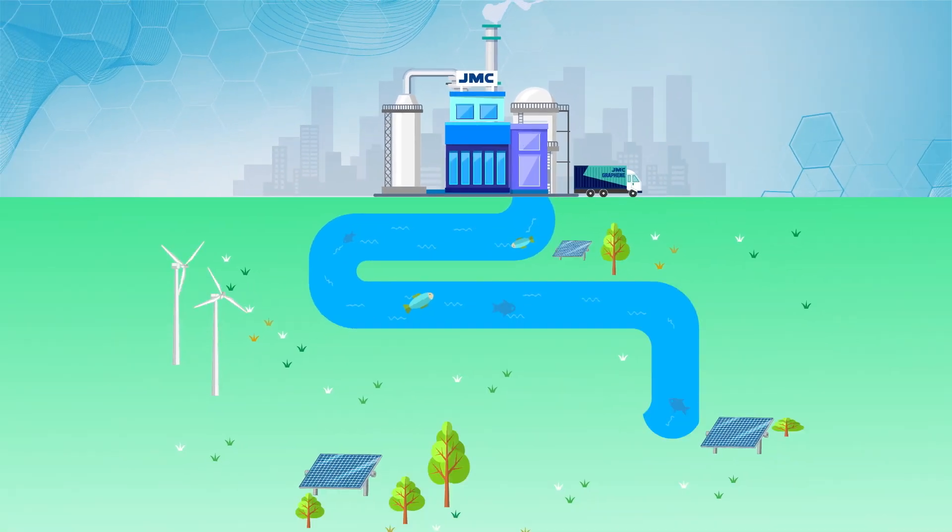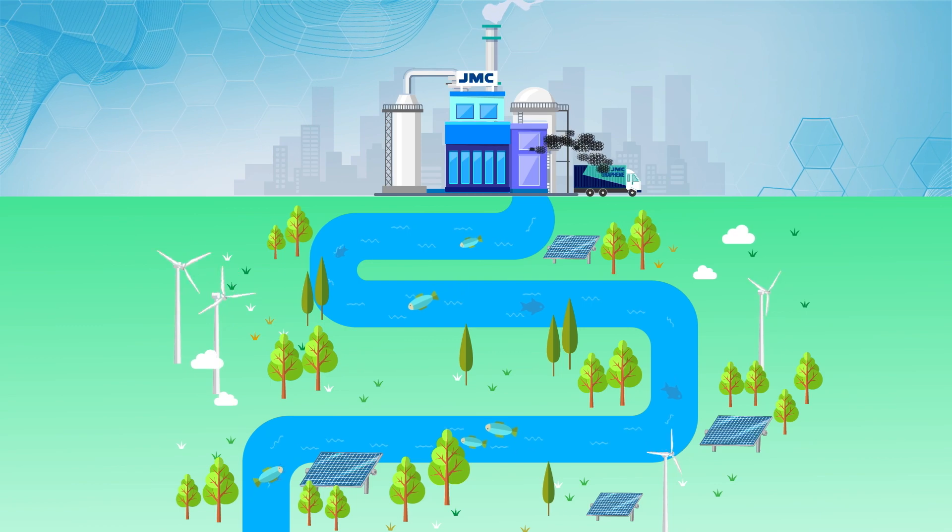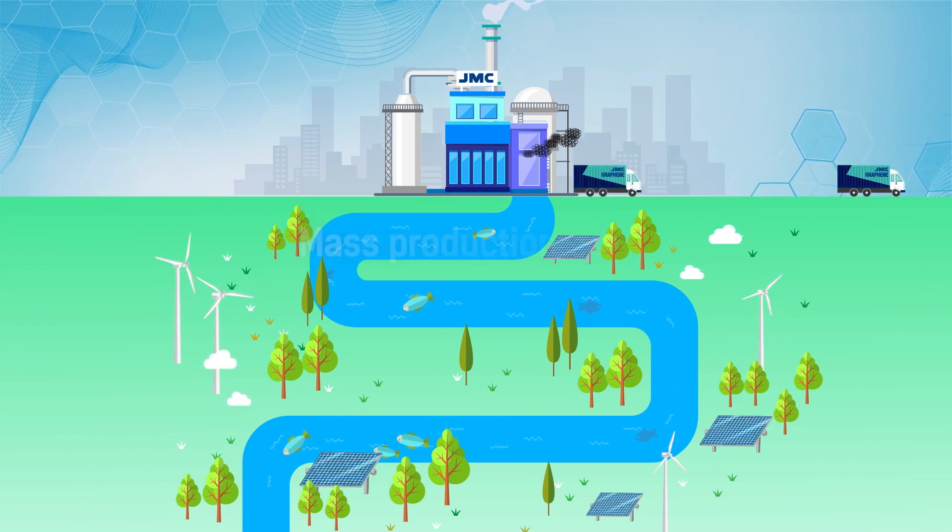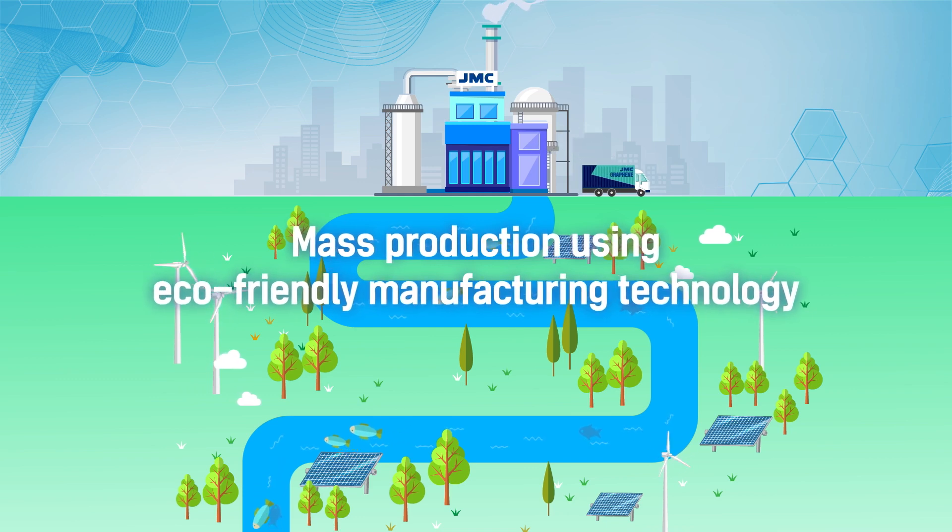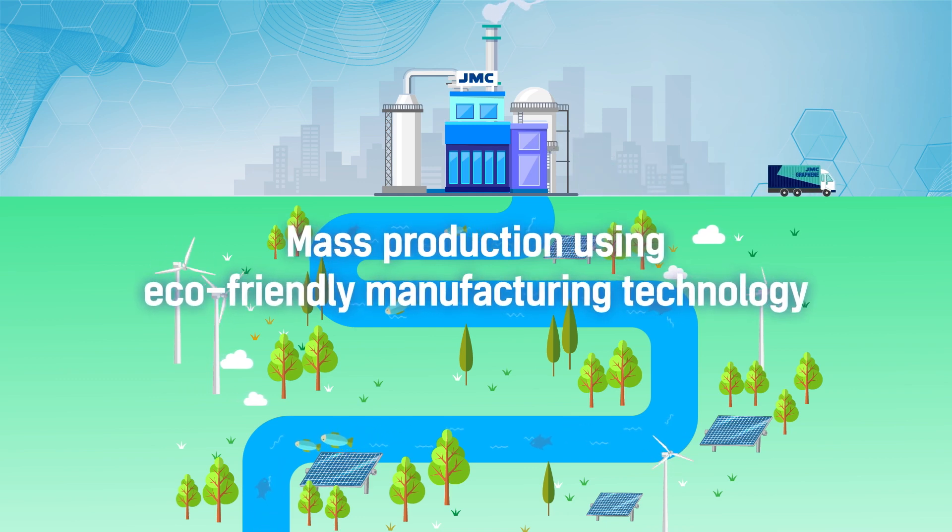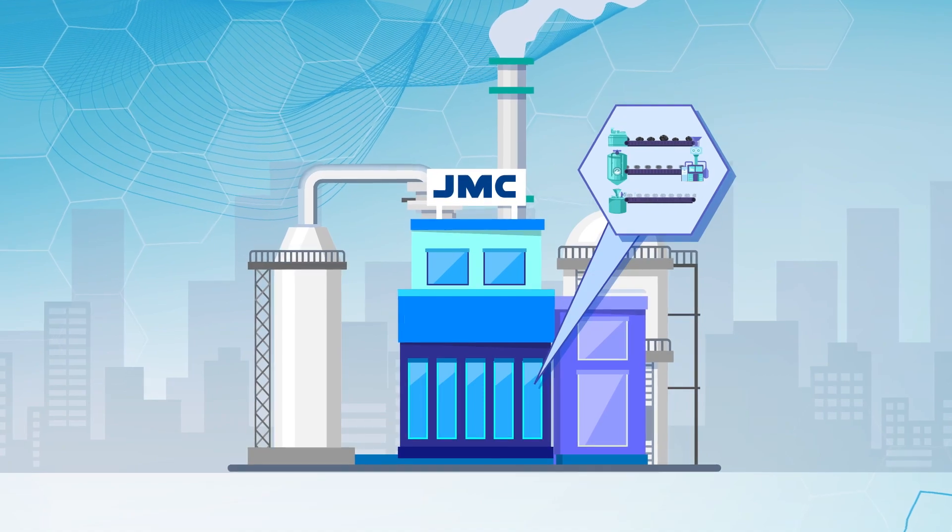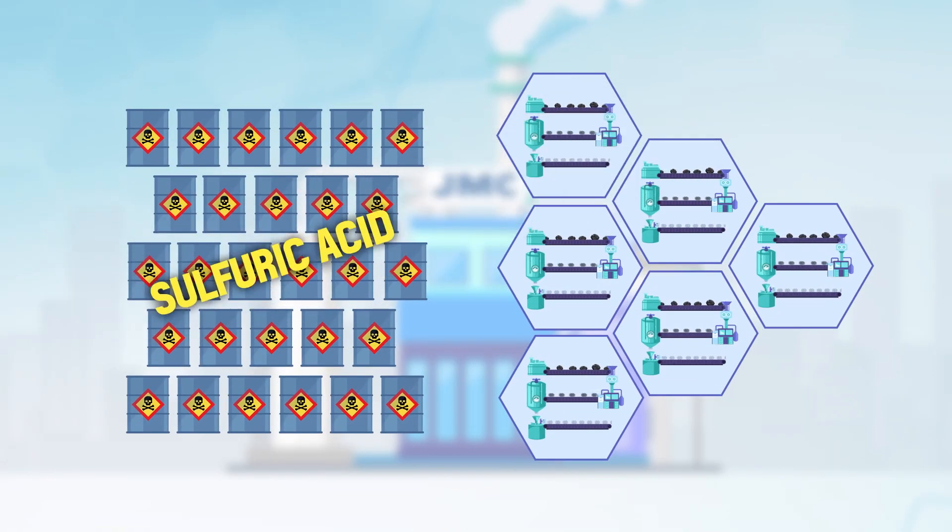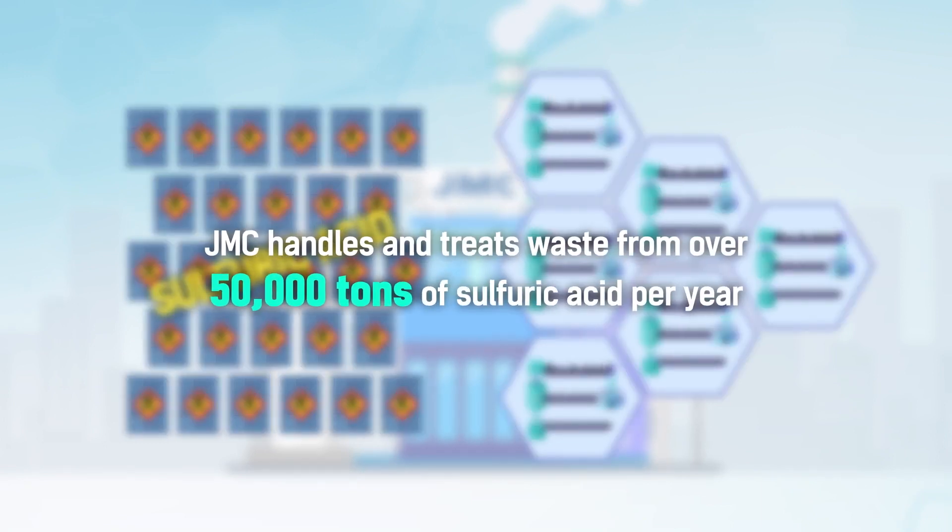The particular problem of treating a large amount of waste sulfuric acid is extremely important. JMC solved this problem by using its own eco-friendly systems. JMC has the core technologies that can be applied to successfully mass-produce graphene oxide safely and competitively.